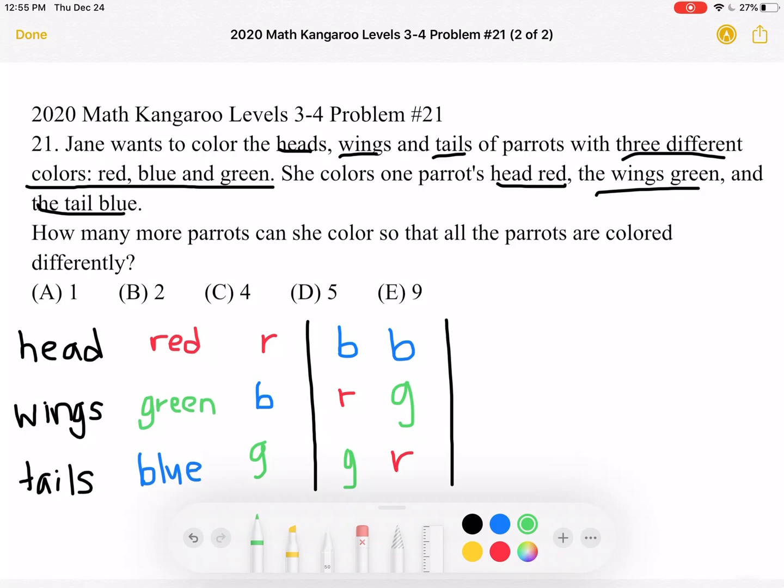Now let's see with the green head. The green head, we can have red wings, blue tail. And again keeping with the green head, we could also have green head, blue wings, red tail.